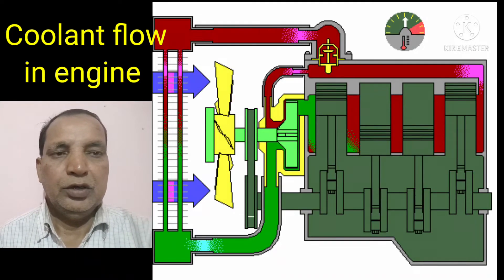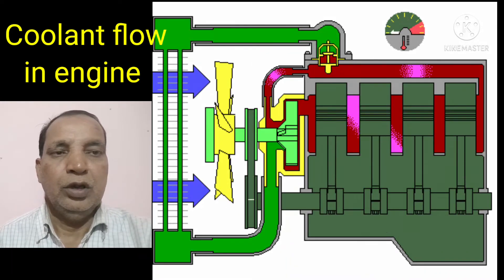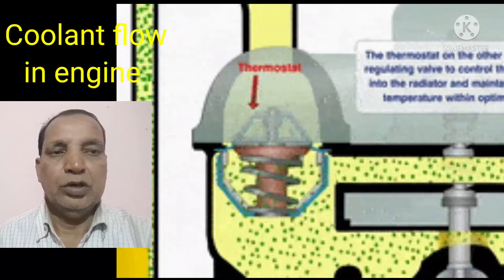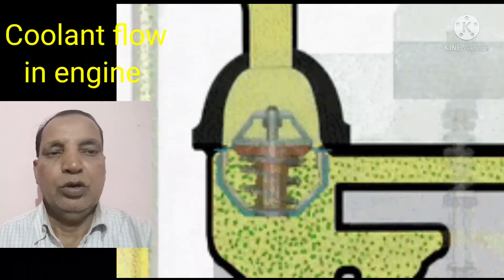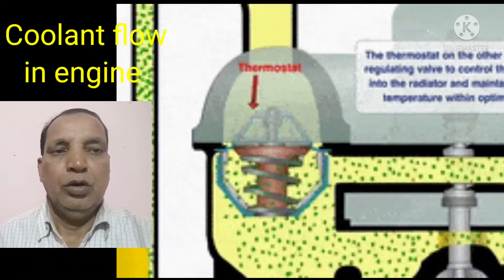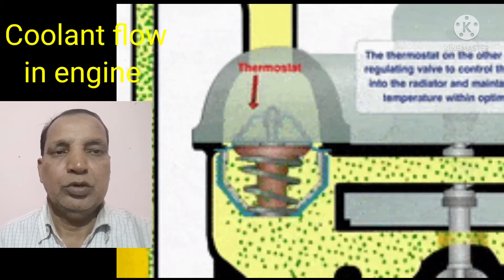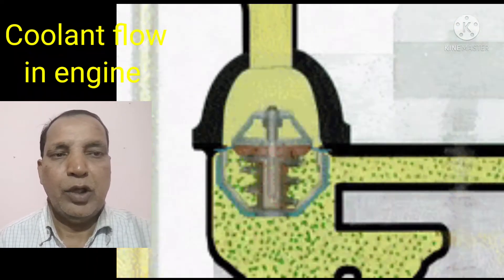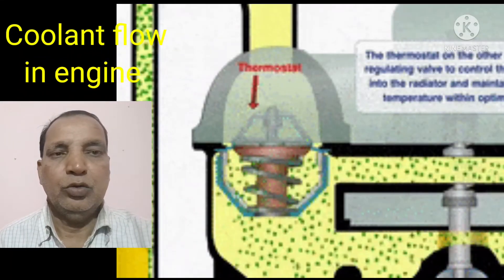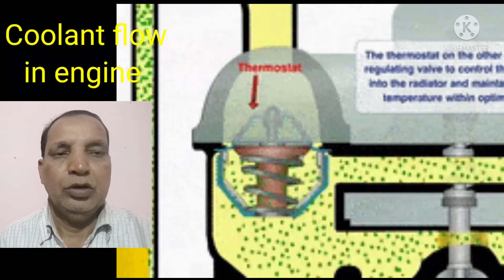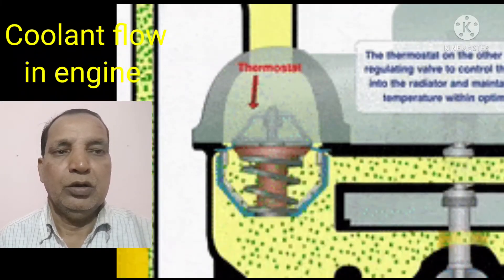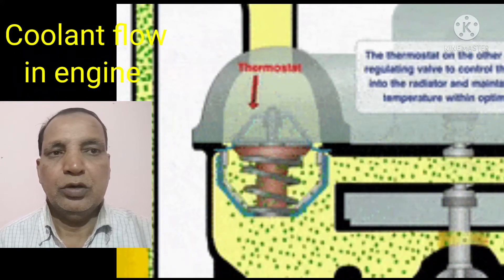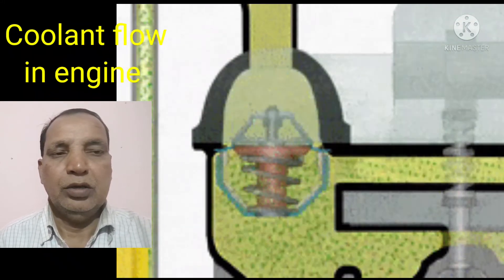This is the process for the flow of coolant and working of the thermostat in the engine. When the thermostat will be open, the coolant flows directly through the radiator for cooling. In this animation we have also showed you how the coolant flows in this system. When the thermostat will be open, the coolant goes to the radiator system — this is the main process for the coolant flow.